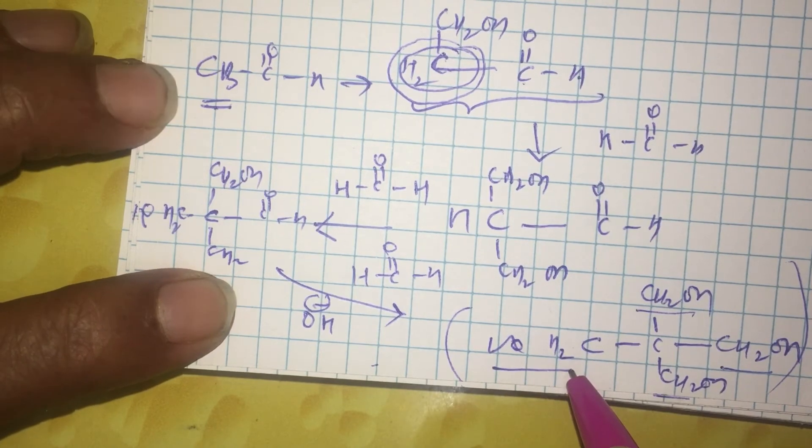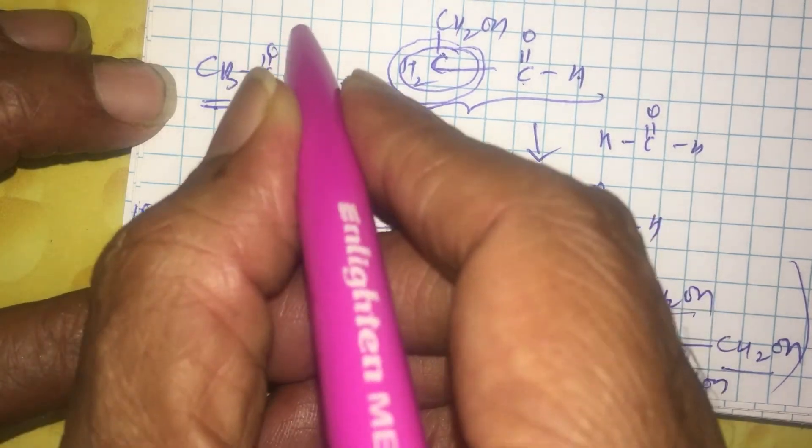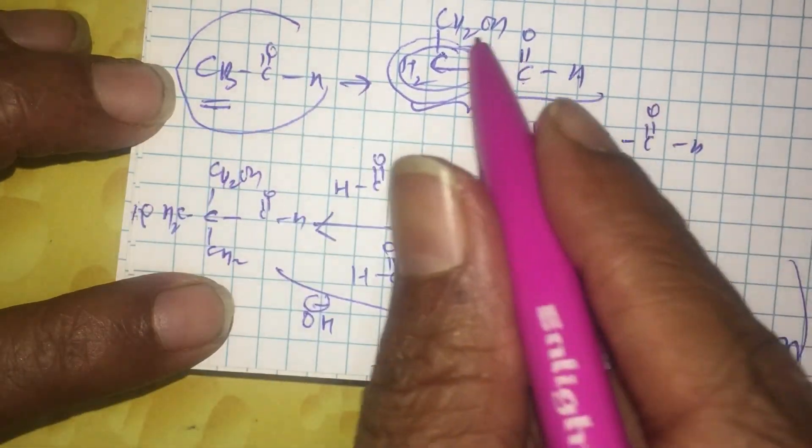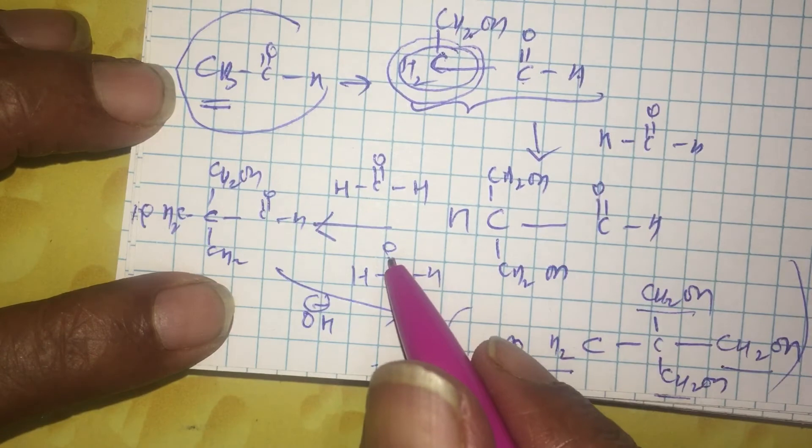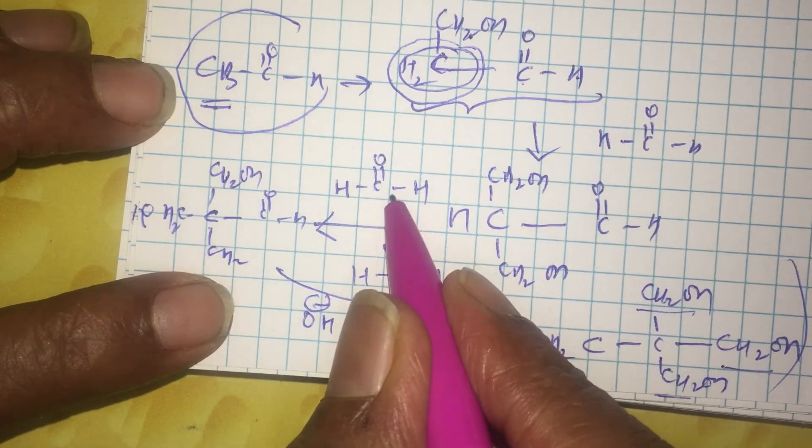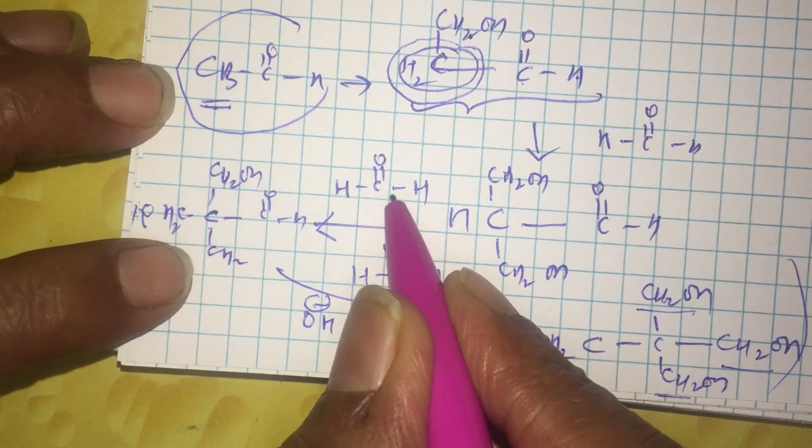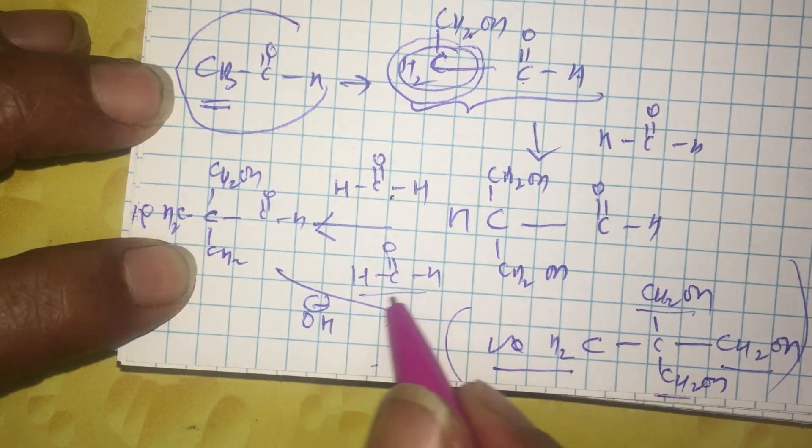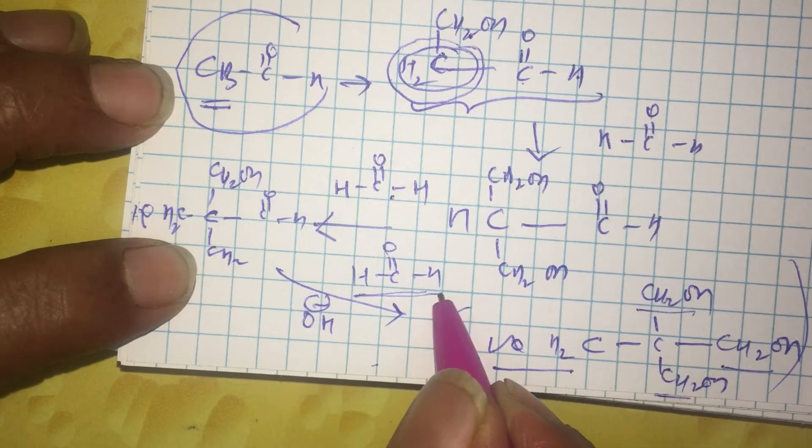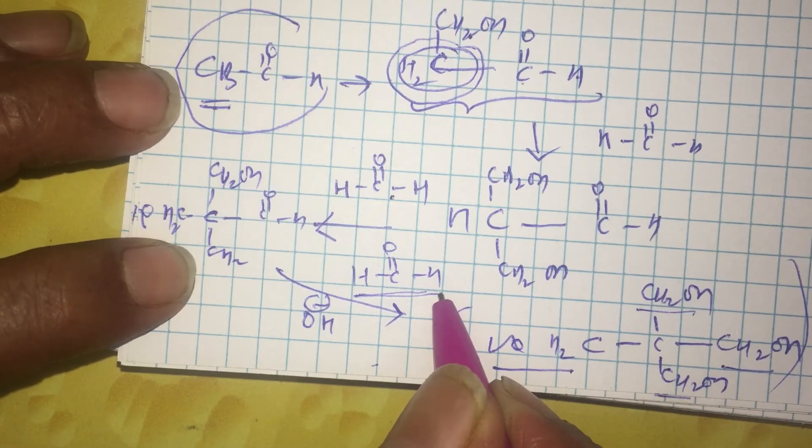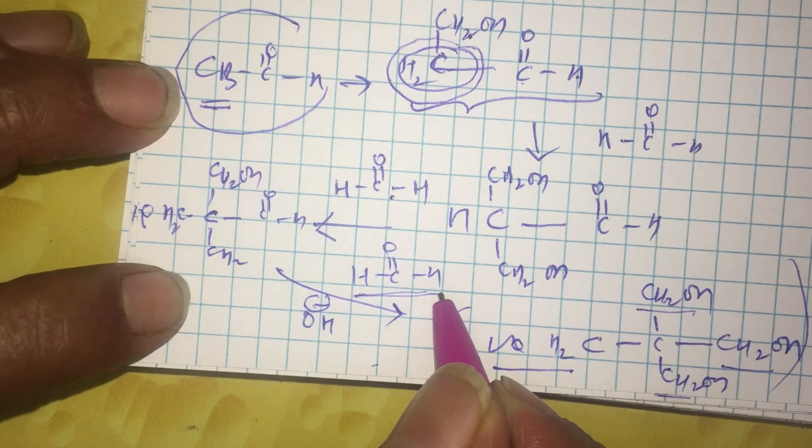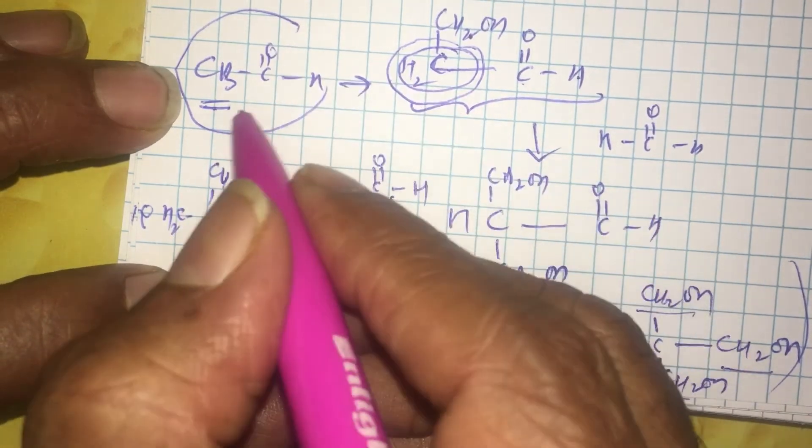So, in this course of reaction, how many moles of formaldehyde are reacting with acetaldehyde? First three moles in a routine aldol condensation and finally two more moles of formaldehyde in a typical Cannizzaro reaction. So, total number of moles reacting here are five. Therefore, this can be a typical NEET question.